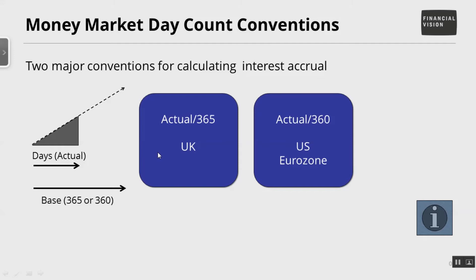In the previous example we used 182 days divided by 365, and we did that because it was a sterling deposit. The UK money markets use the actual over 365 day count convention — they count the actual number of days for the deposit and divide by the base days of 365. If on the other hand that deposit had been in US dollars or euros, they use the actual/360 method, where the number of days would still be 182 but divided by 360, because according to that convention there are 360 days in a year.